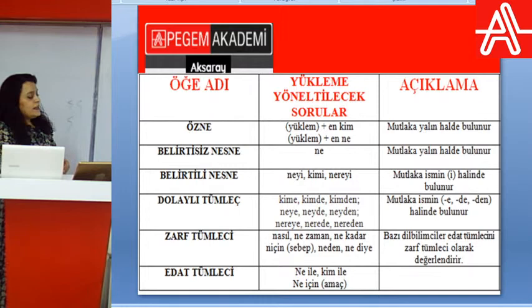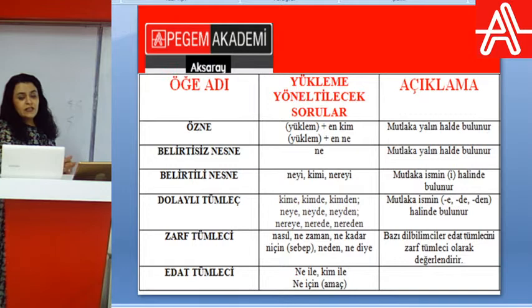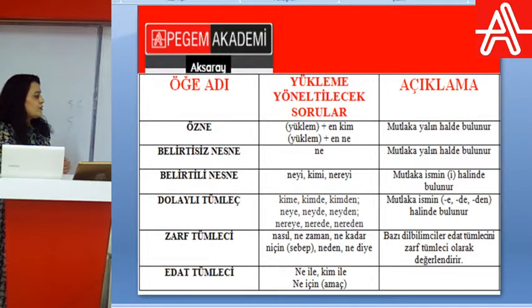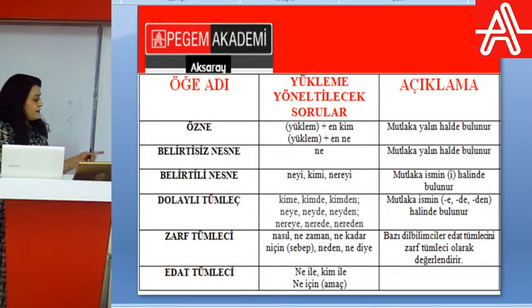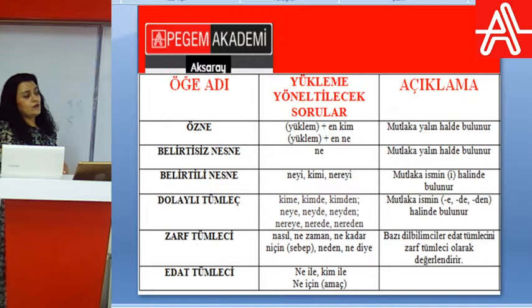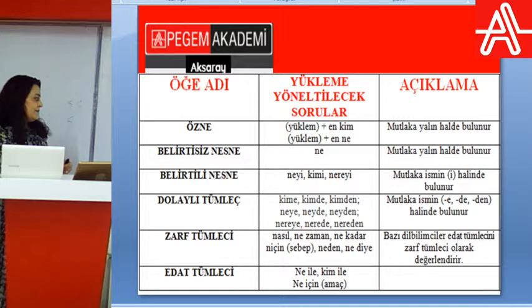Bir diğer ögemiz zarf tümlecidir. Yükleme sorulan nasıl, ne zaman, ne kadar, neden, niçin, niye, ne diye soruları ile nere sözcüğü bize zarf tümlecini verir. Bu soru sözcükleri hangi ögeyi bulduruyor bunu bilmezsek ögeler konusunu yapamayız. Hangi soru hangi ögeye karşılık geliyor bunu mutlaka bilelim.